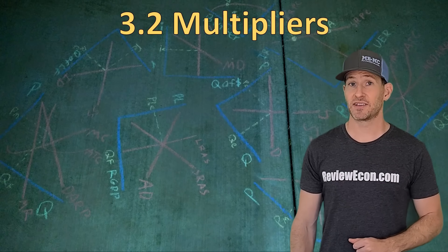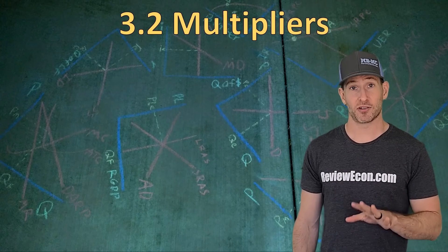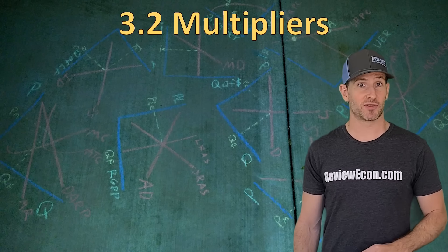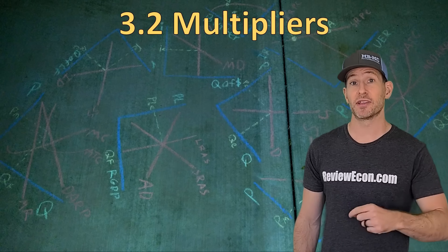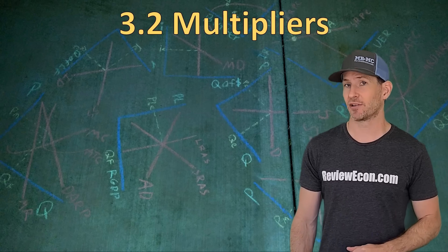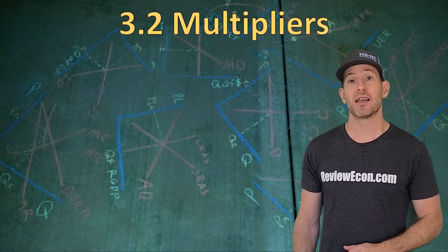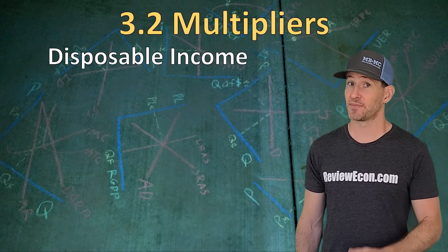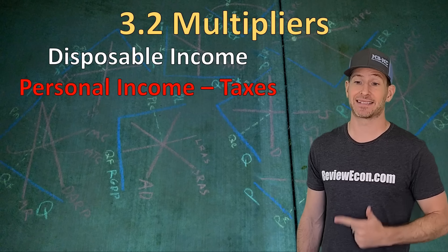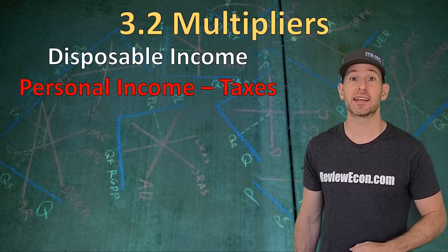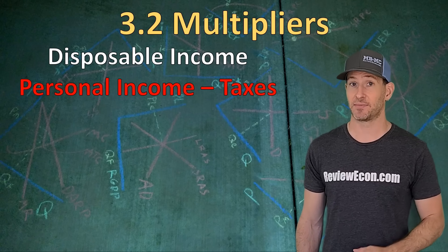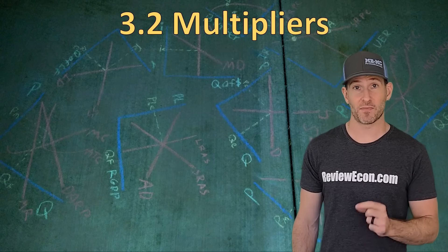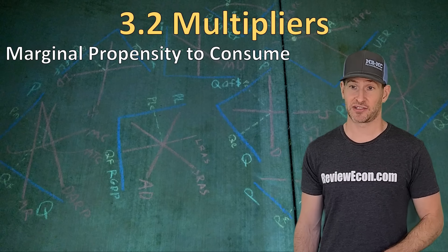The first concept we're going to learn in this unit is called multipliers. Some spending by a consumer within the economy will ripple through the economy and impact GDP by a greater amount. That's because consumers have disposable income — that's personal income minus taxes — and there are two things they can do with that income: they can spend it or save it. That leads us to what's called the marginal propensity to consume.